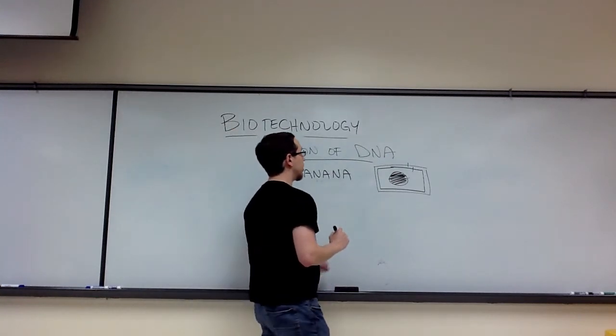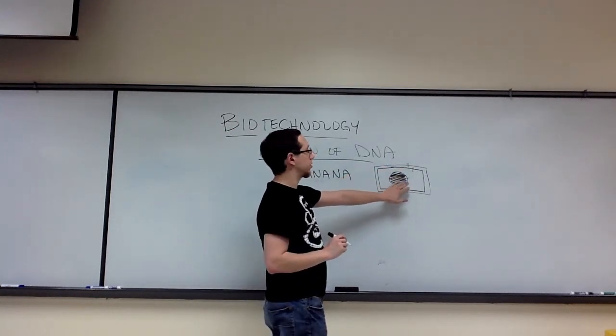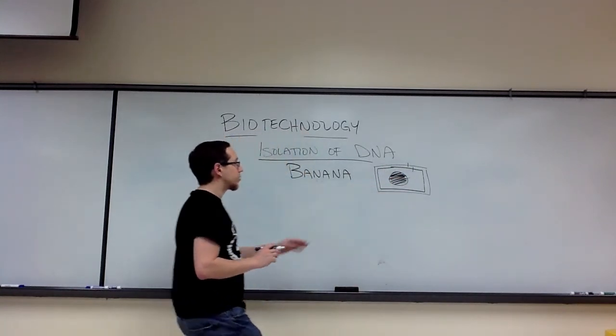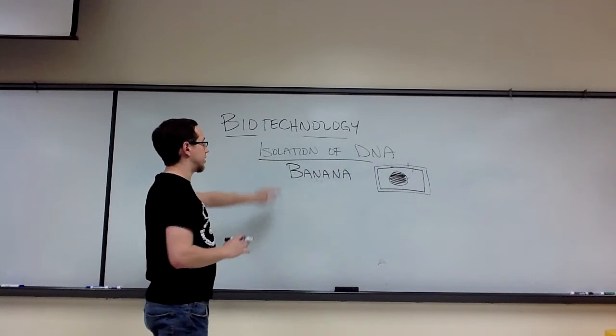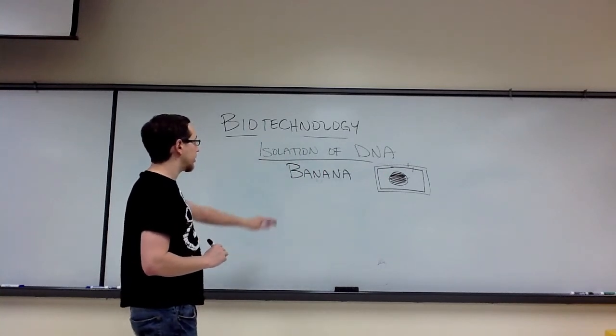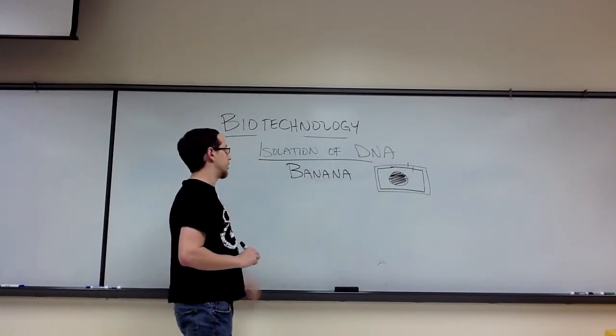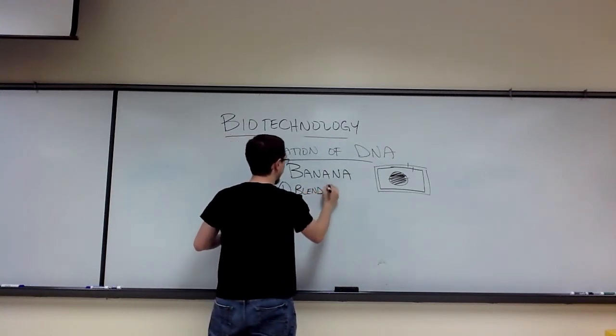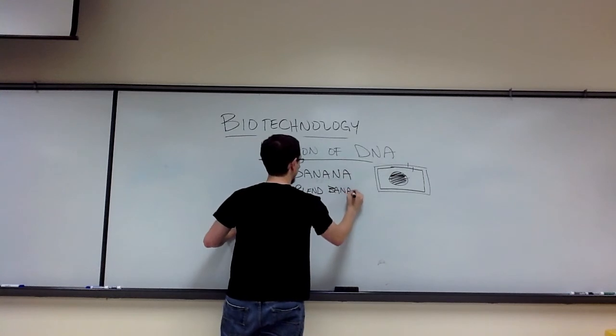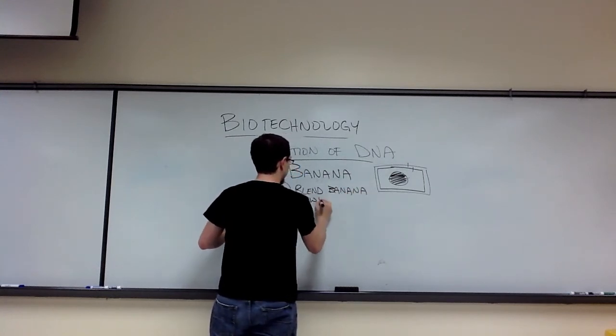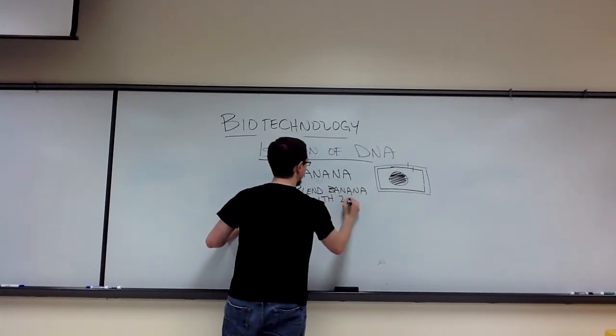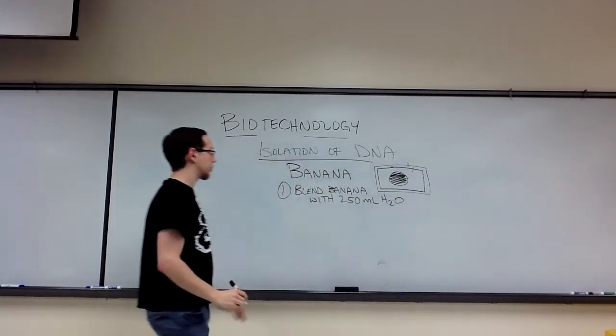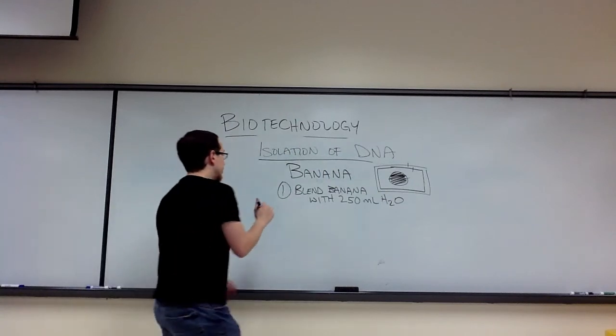So we need to get through all of these layers, these membranes and cell wall, and we need to remove those proteins and isolate the DNA. So what we're going to do is we're going to take a banana and we're going to blend it. So we blend the banana, and we add 250 ml of water to it.